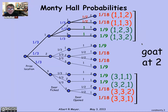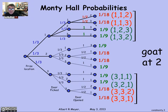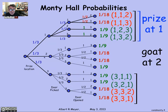Let's look at the event that the goat is at door 2. This is the branch where the prize is at door 2, so in all the other branches the goat is at door 2, which means we have eight of the 12 outcomes in the event 'goat is at 2.' Let's also look at the event that the prize is at 1 — that's just this branch of the tree.